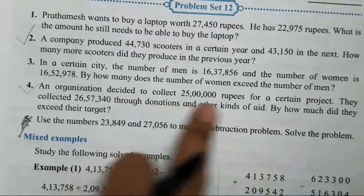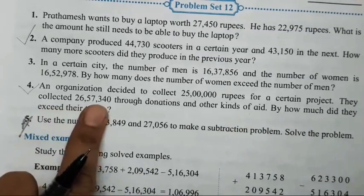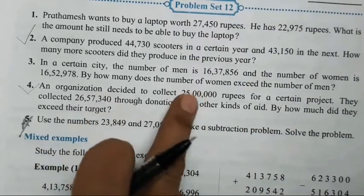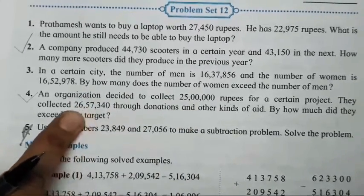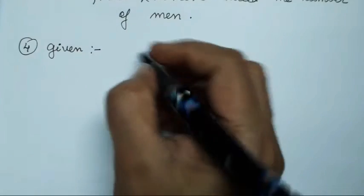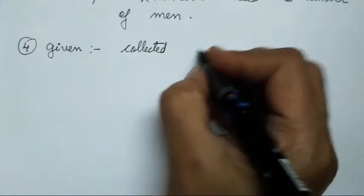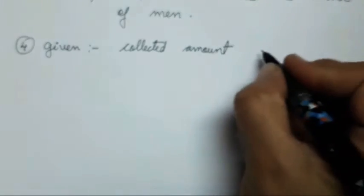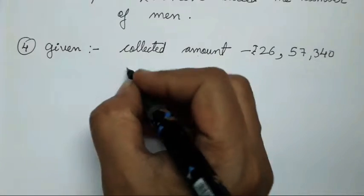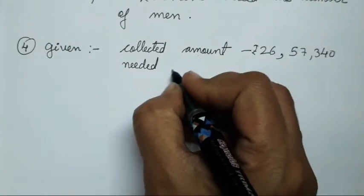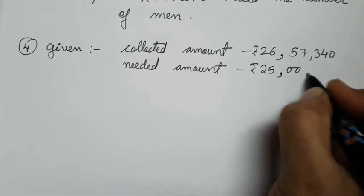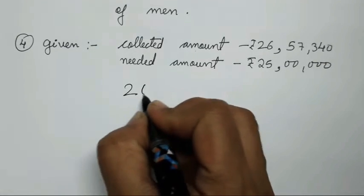An organization decided to collect 25 lakh rupees for a certain project. They collected 26,57,340 through donations and other aids. By how much did they exceed their target? So we write given: collected amount is rupees 26,57,340; needed amount is 25 lakh rupees. We subtract to find the extra amount they have.